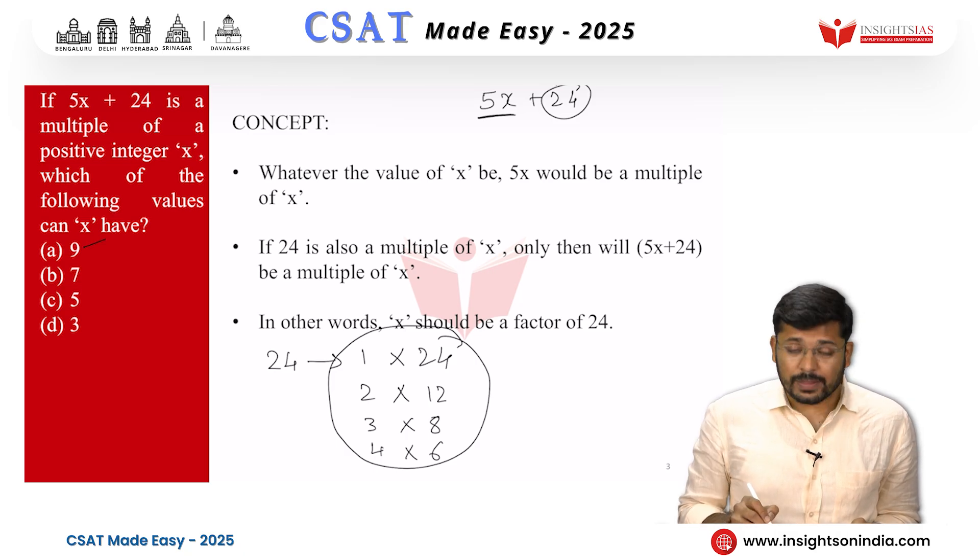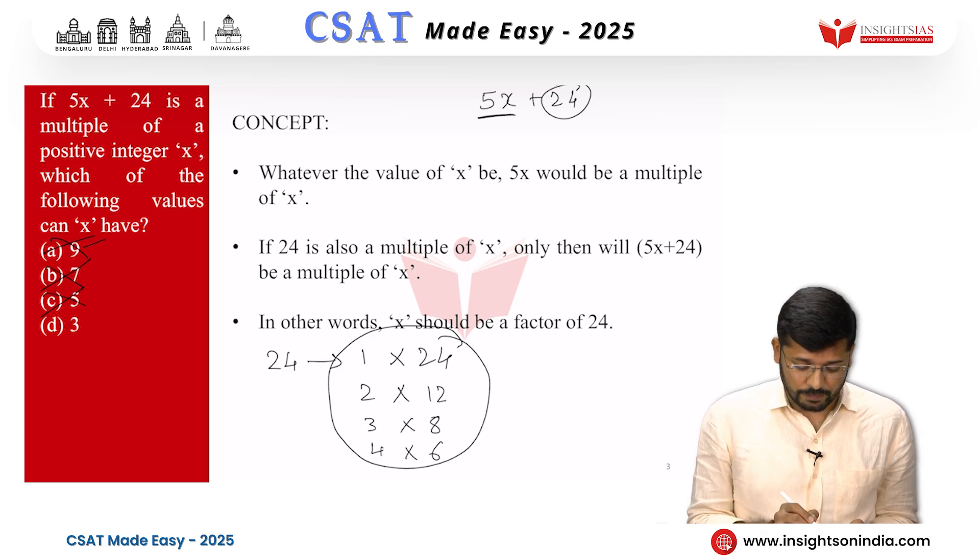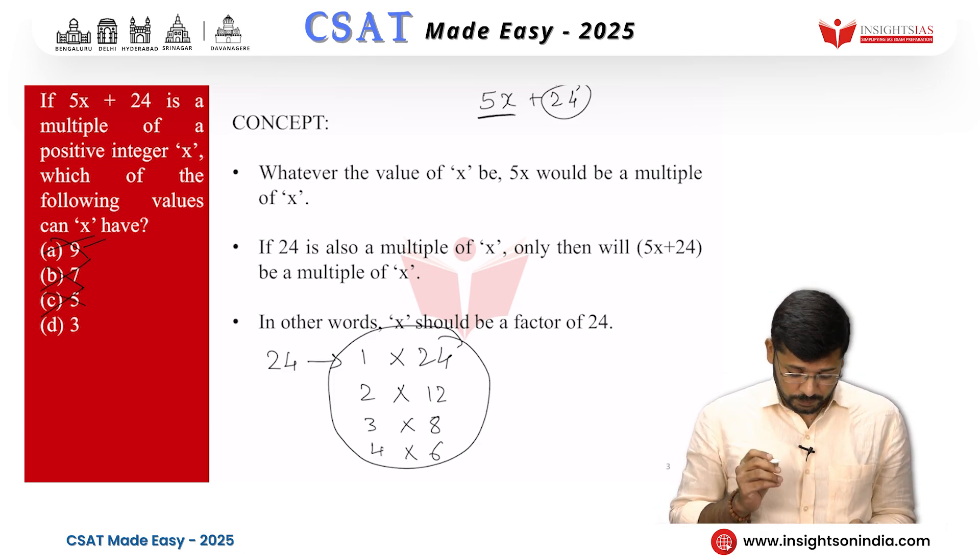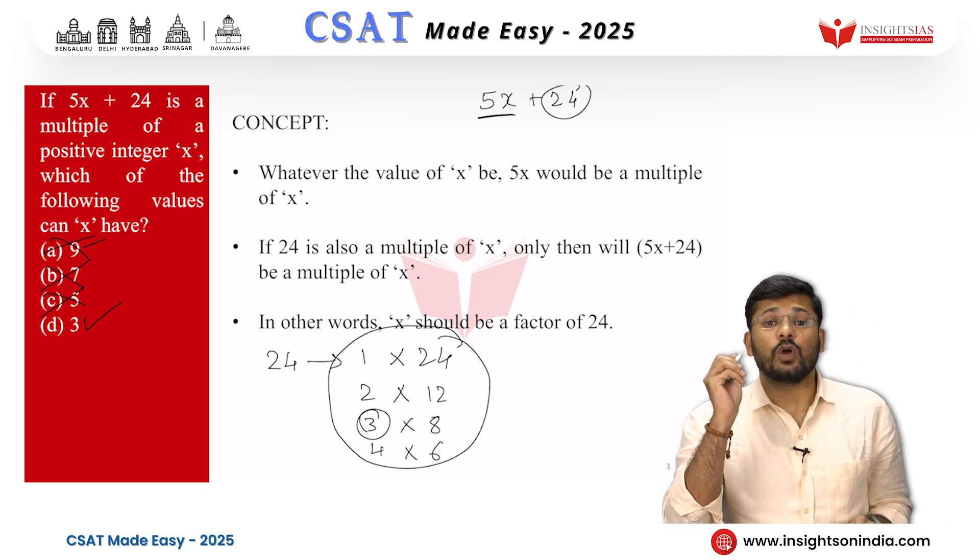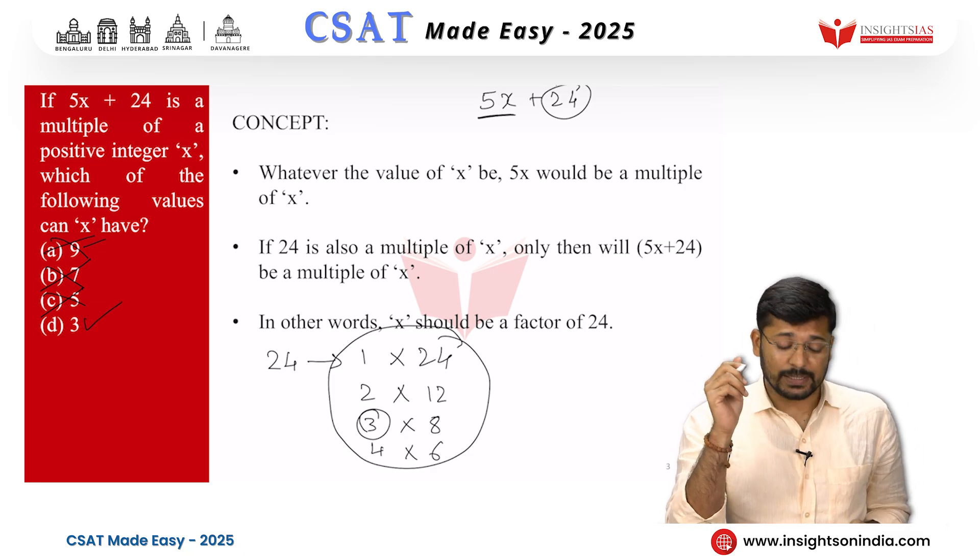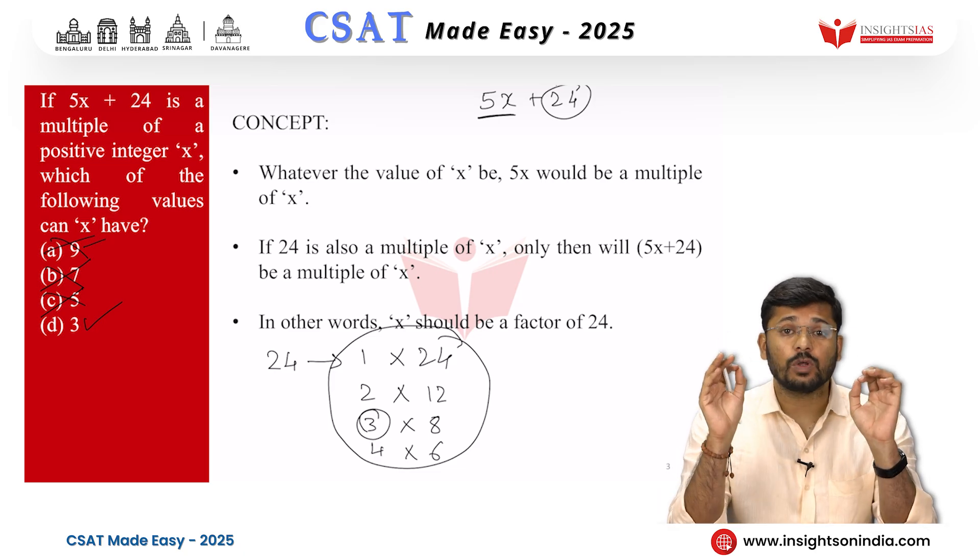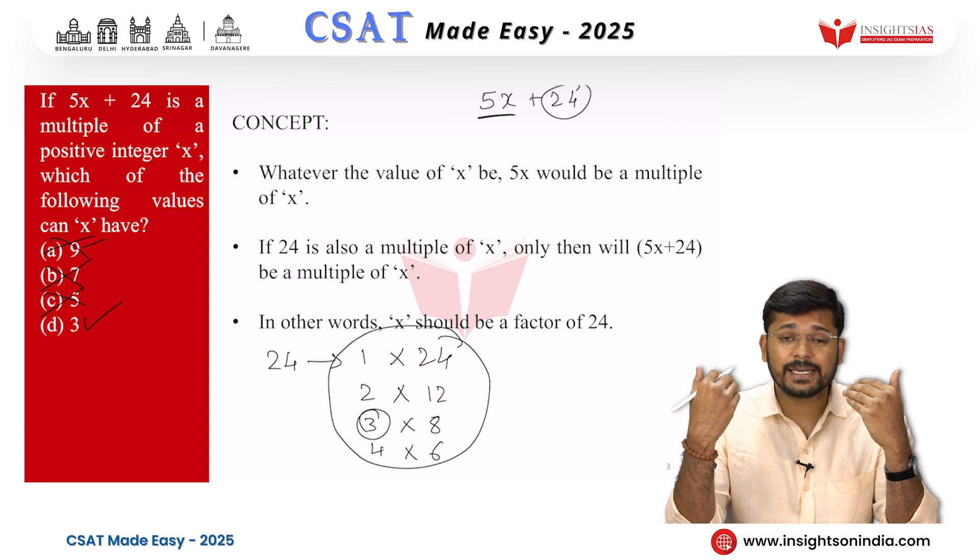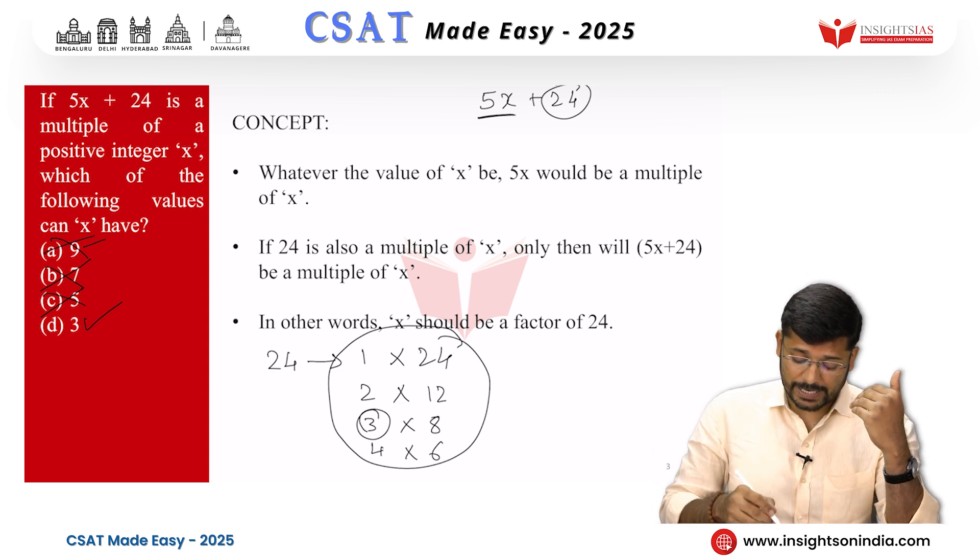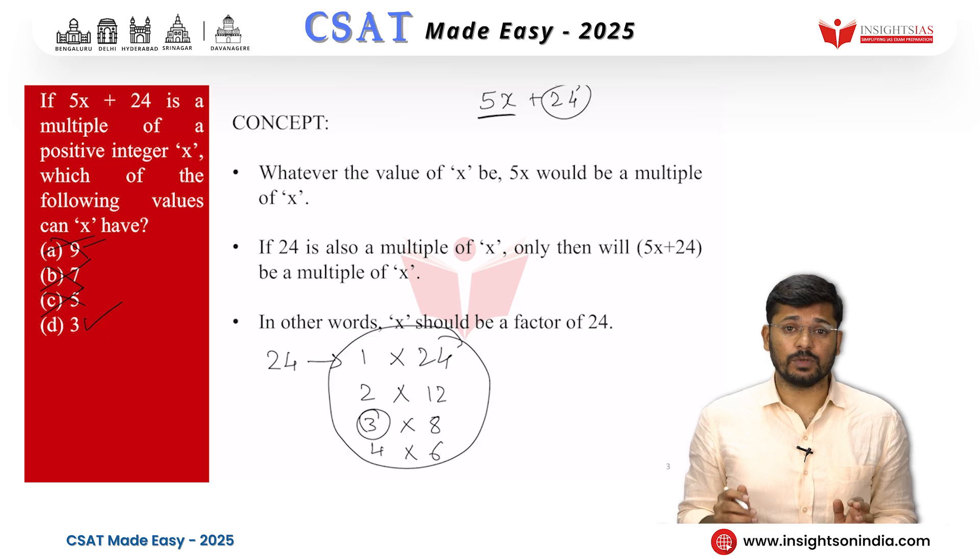Look at 9. No, 9 is not a factor of 24. Look at 7. No, 7 is not a factor of 24. Look at 5. 5 is also not a factor of 24. But 3, yes, 3 is a factor of 24. So one of the possible values of x is 3. x is not definitely 3. 3 is one of the possible values of x. x can take many values. Out of these 8 values, it can take any of the value.